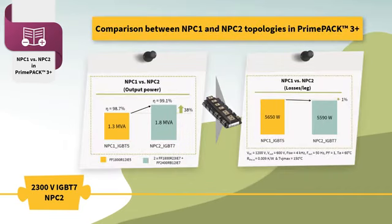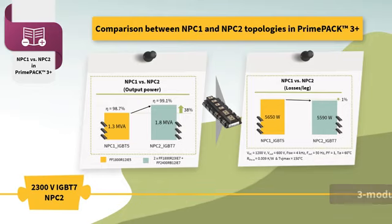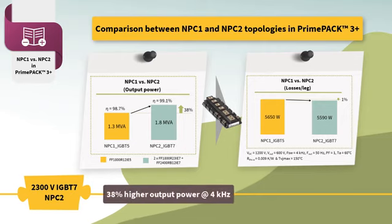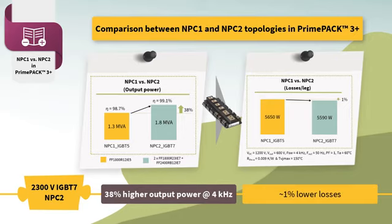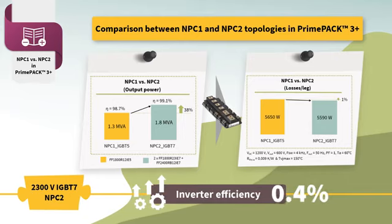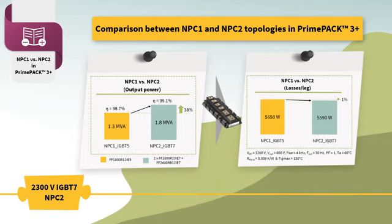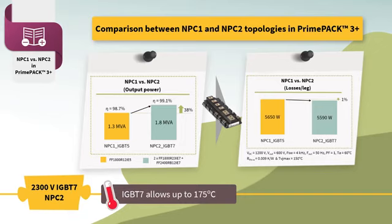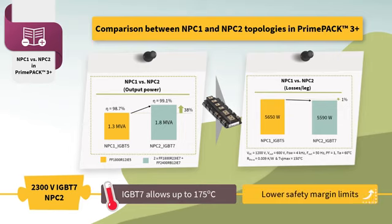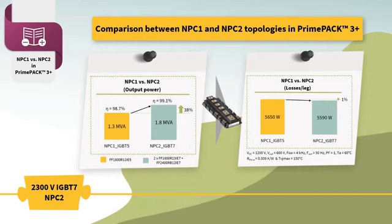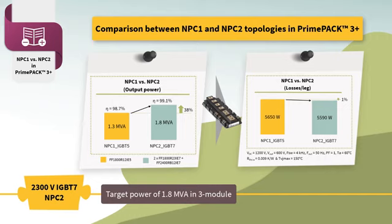Nowadays, the NPC1 topology is built with three PrimePak 3 modules. So, for a fair comparison between NPC1 and NPC2 topologies, a 3-module solution is considered. An NPC2 topology enables the designer to reach 38% higher output power at a 4 kHz switching frequency operation with almost 1% lower losses. This further improves the inverter's efficiency by 0.4%, which is very impressive. As mentioned, IGBT-7 chip technology allows up to 175 degrees, enabling the increase of the inverter's power which can be operated within lower safety margin limits. Furthermore, it is possible to reach a target power of 1.8 MVA in a 3-module configuration and of 1.3 MVA in a 2-module configuration.